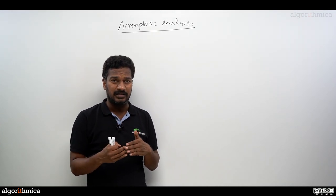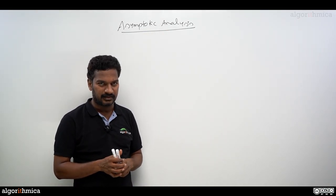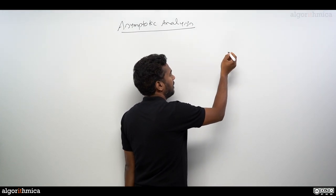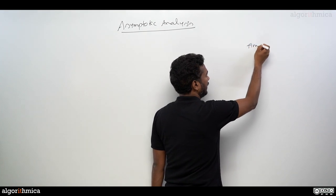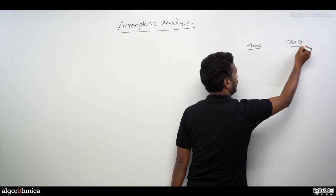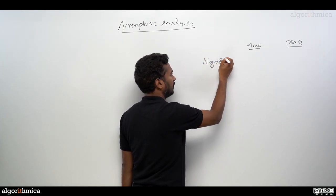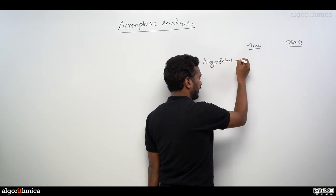But while doing such analysis, what is the importance or need of this asymptotic analysis? Let's take an example. For any algorithm, we have two dimensions here: let's call this the time dimension and also the space dimension.